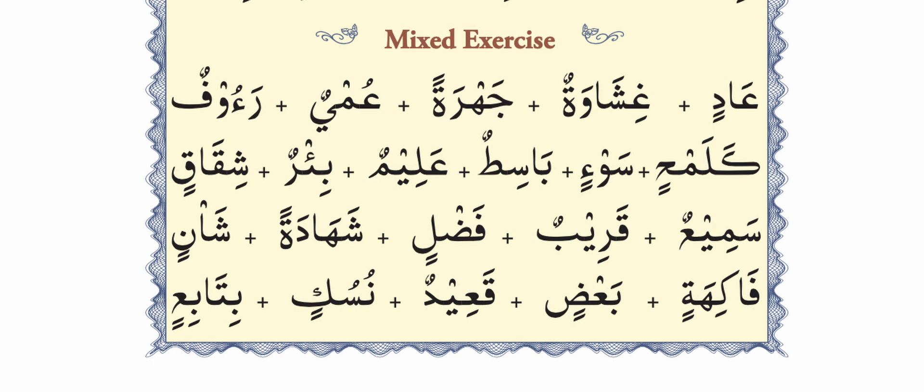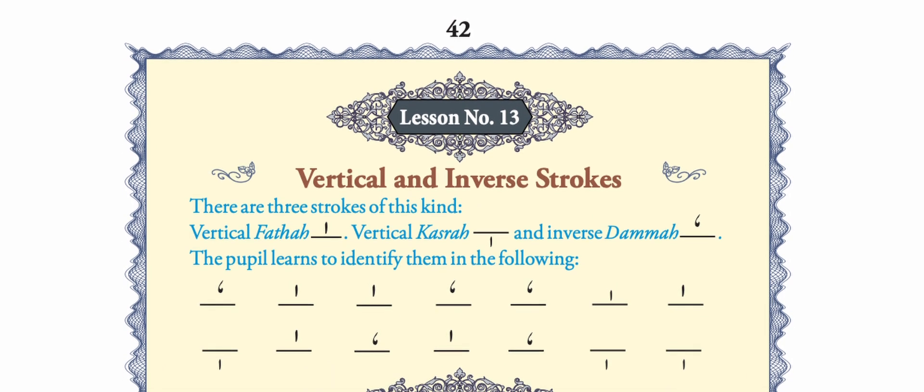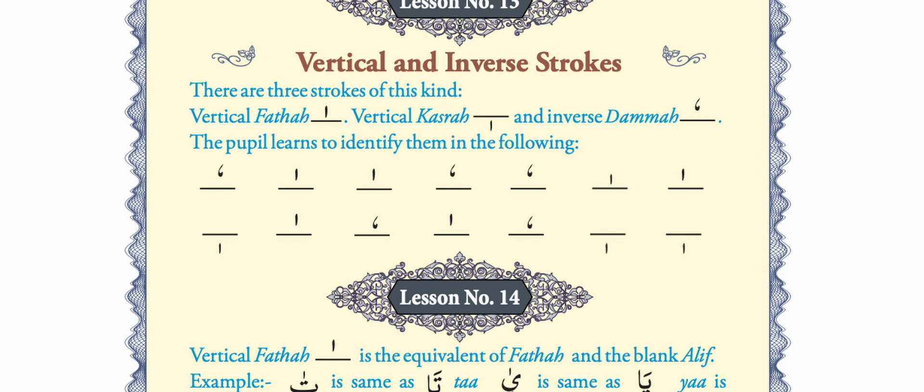This is how we continue reading tanween. When we go to page number 42 and lesson number 13, we see a new lesson about vertical fatha, vertical kasra, and inverse dhamma. In this lesson, children are asked to remember their names and identify them. A vertical line on top of a letter is called vertical fatha; the same line below the letter is called vertical kasra; and the third sign is called inverse dhamma — that is dhamma turned upside down.